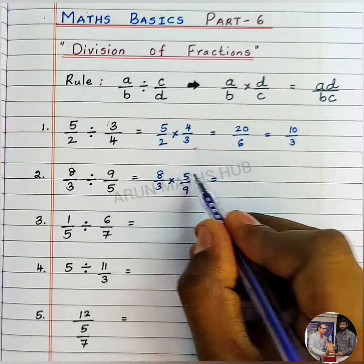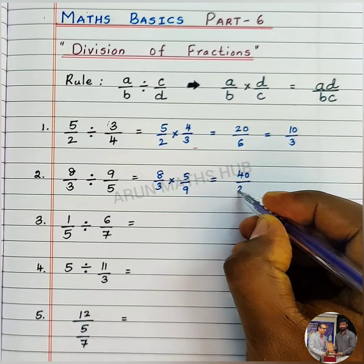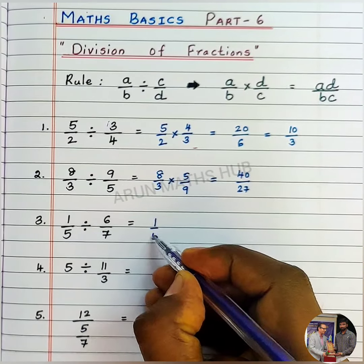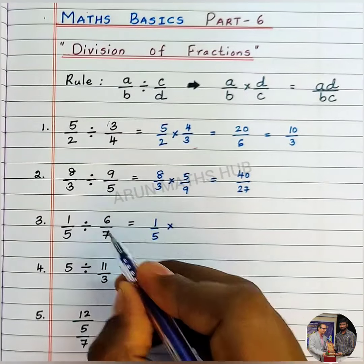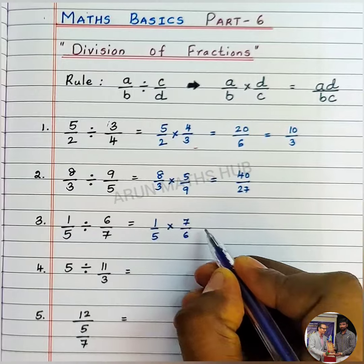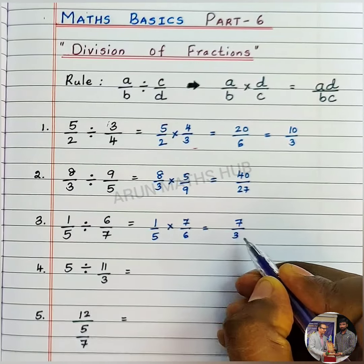The same way, 1/5 division symbol becomes multiplication. 6/7 becomes 7/6. 1 into 7 is 7, 5 times 6 is 30.